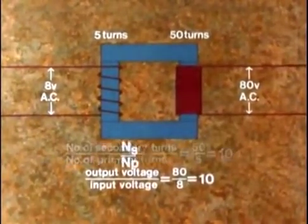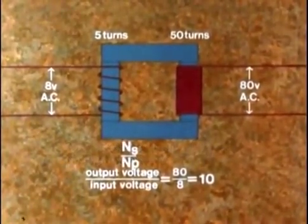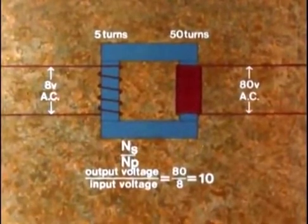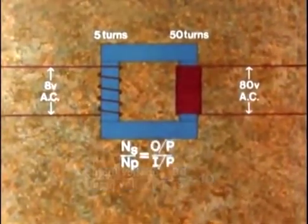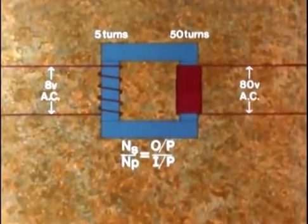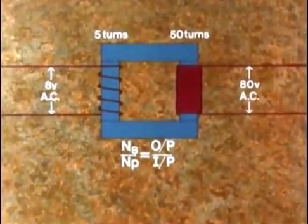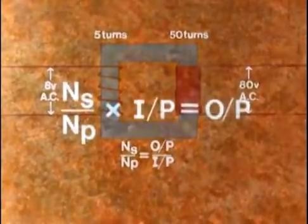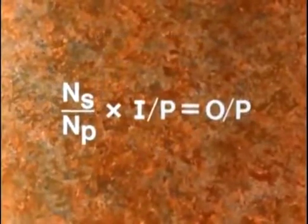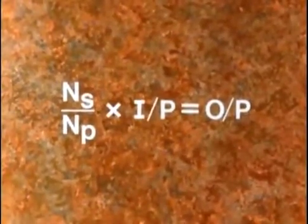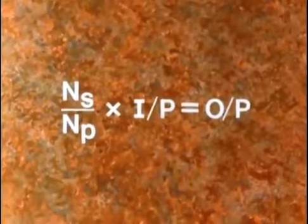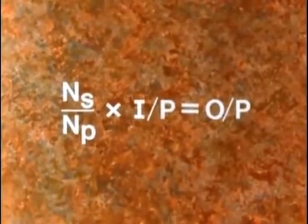Using obvious abbreviations, this means that the number of secondary turns divided by the number of primary turns equals output voltage divided by the input voltage. And if we do the simple bit of juggling, we get this formula. Secondary turns divided by primary turns times input voltage equals output voltage.